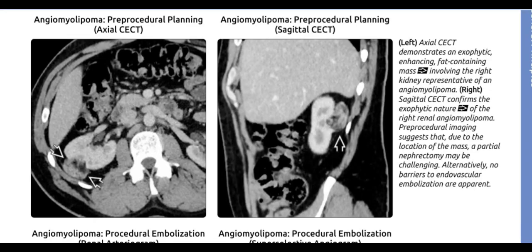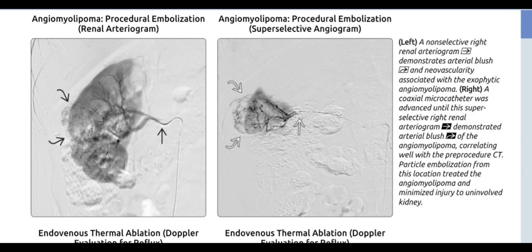Axial CECT demonstrates an exophytic enhancing fat-containing mass involving the right kidney, representative of an angiomyolipoma; sagittal CECT confirms its exophytic nature. Pre-procedural imaging suggests that due to the location of the mass, a partial nephrectomy may be challenging; alternatively, no barriers to endovascular embolization are apparent. A non-selective right renal arteriogram demonstrates arterial blush and neovascularity associated with the exophytic angiomyolipoma. A coaxial microcatheter was advanced until a superselective right renal arteriogram demonstrated arterial blush of the angiomyolipoma, correlating well with the procedure; particle embolization from this location treated the angiomyolipoma and minimized injury to the uninvolved kidney.